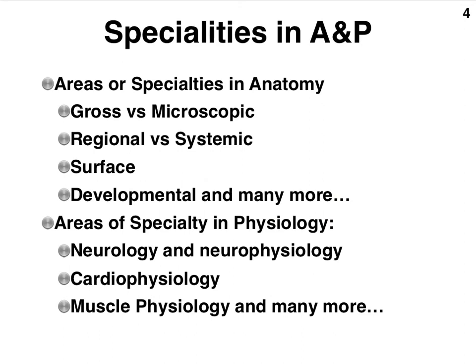Anatomy and physiology complement one another, yet we still talk about a person being primarily an anatomist versus primarily a physiologist, implying they tend to focus more on one of these two studies. There are many specialties in both anatomy and physiology. If we're studying structures so small that we need a microscope, we refer to that as microscopic anatomy. On the other hand, if we can see the structures with our bare eyes, we refer to that form of anatomy as gross anatomy.